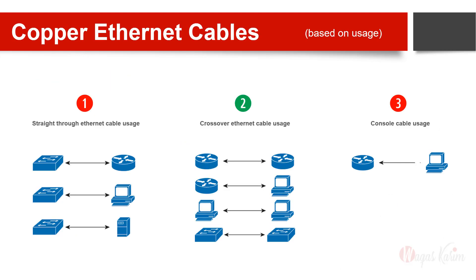The first type of copper ethernet cable is called straight-through cable. The second type is called crossover, and the third type is a special type called console cable.